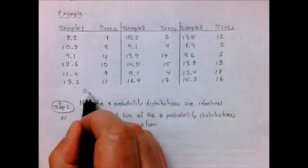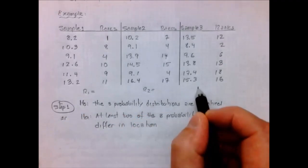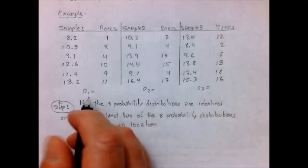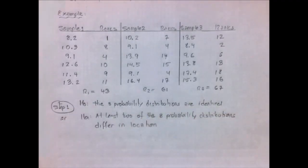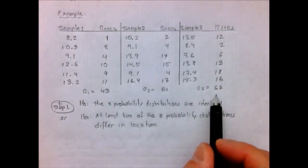We are going to call them R1, R2, and R3. And what I got was 43, 61, and 67.